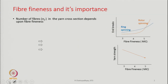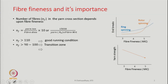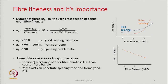There are two diagrams on the right-hand side. One diagram shows fineness versus end breaks, and the other shows fineness versus yarn strength. What is the importance of fiber fineness in rotor spinning? Irrespective of the spinning system, the number of fibers in the yarn cross-section depends on the fineness of the fiber for a given yarn count. When the yarn count is fixed, how many fibers are in the cross-section is decided by fiber fineness.